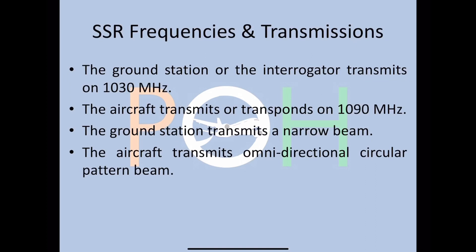Regarding SSR frequencies: the ground station or interrogator transmits on 1030 MHz, and the aircraft transmits or transponds on 1090 MHz. By keeping separate frequencies we improve accuracy and pinpoint which aircraft we are looking for. The ground station transmits a narrow beam specific to the direction it's looking, while the aircraft transmits an omnidirectional circular pattern beam in all directions.